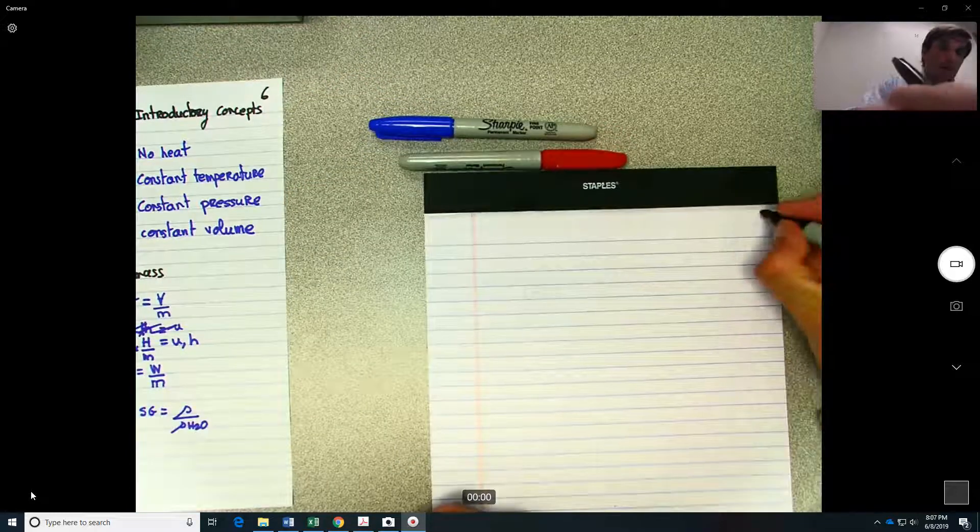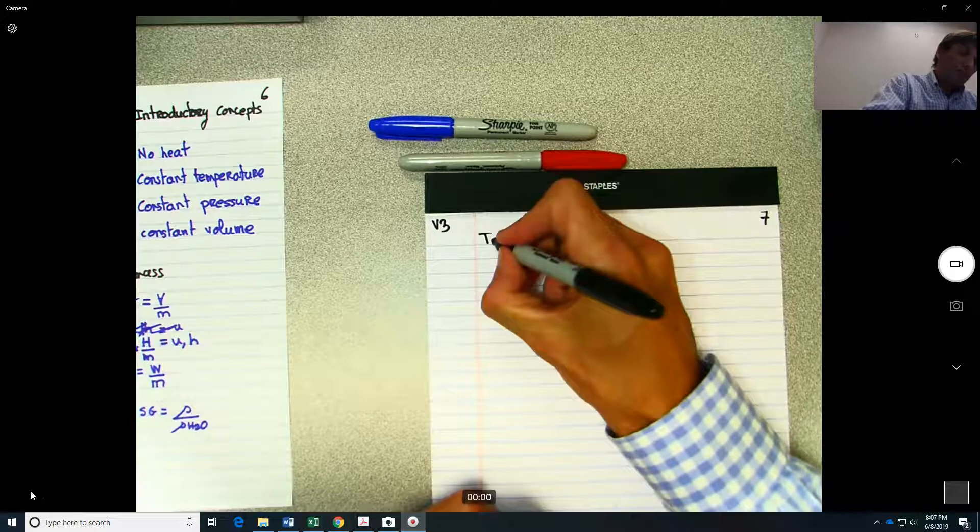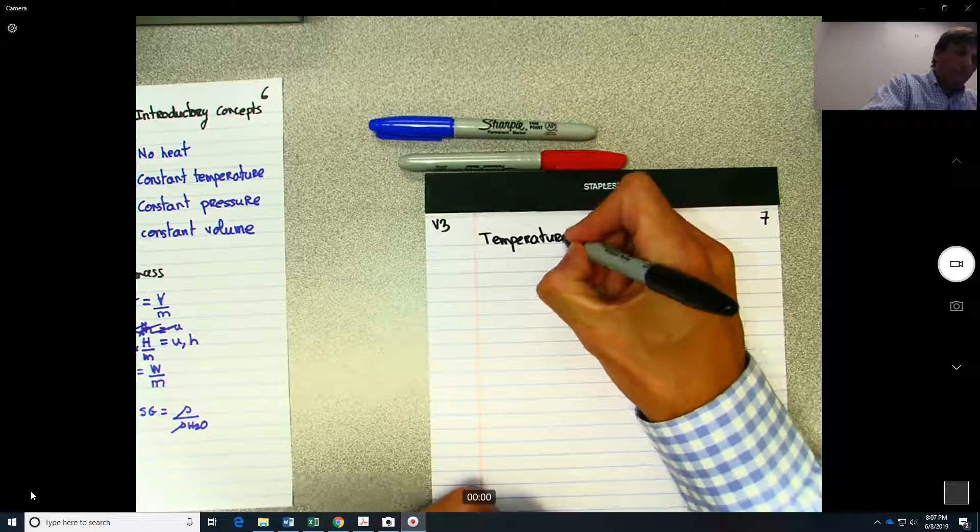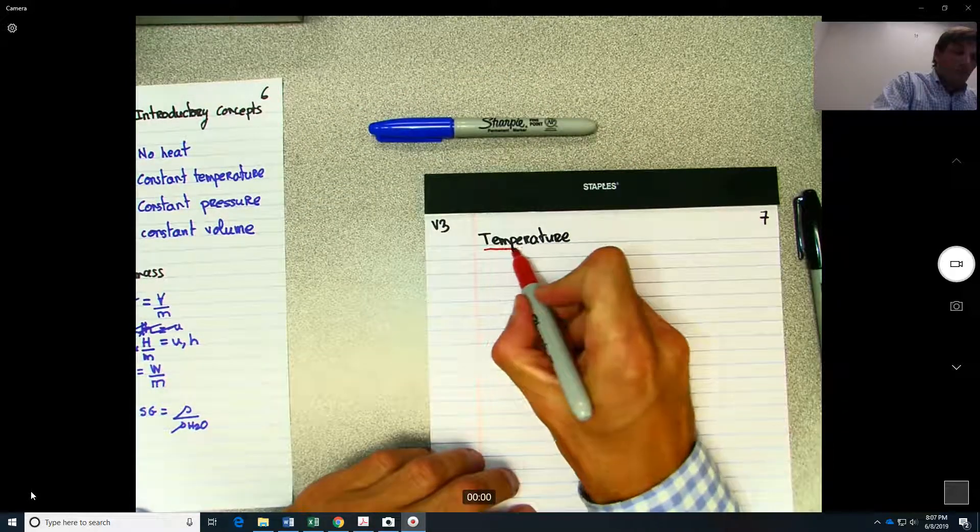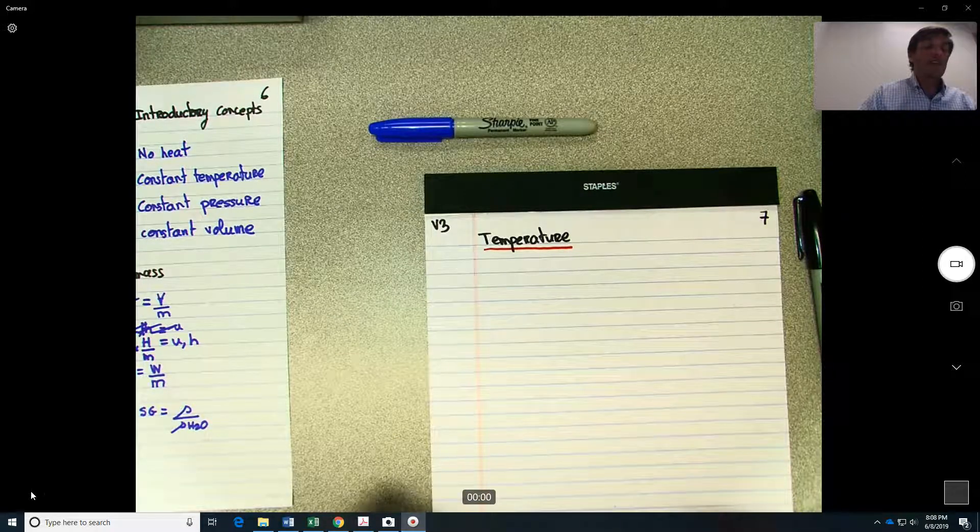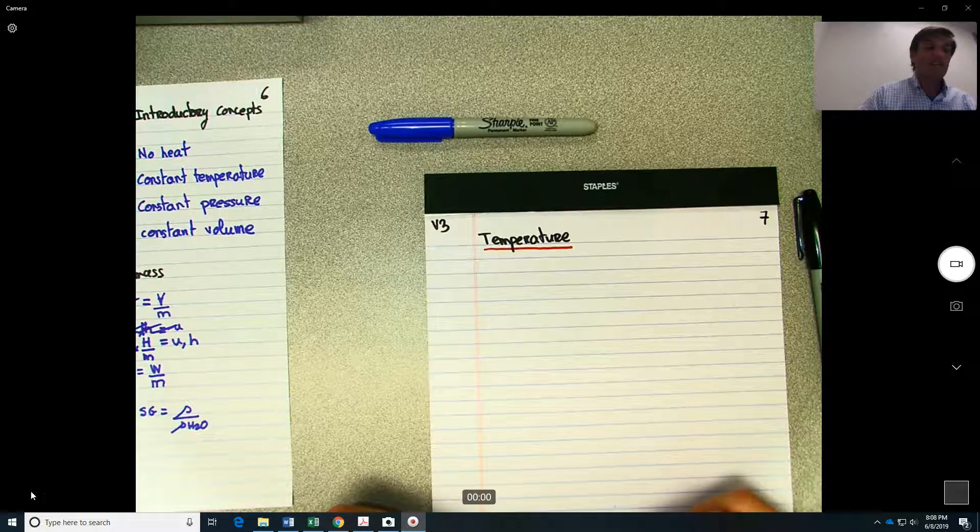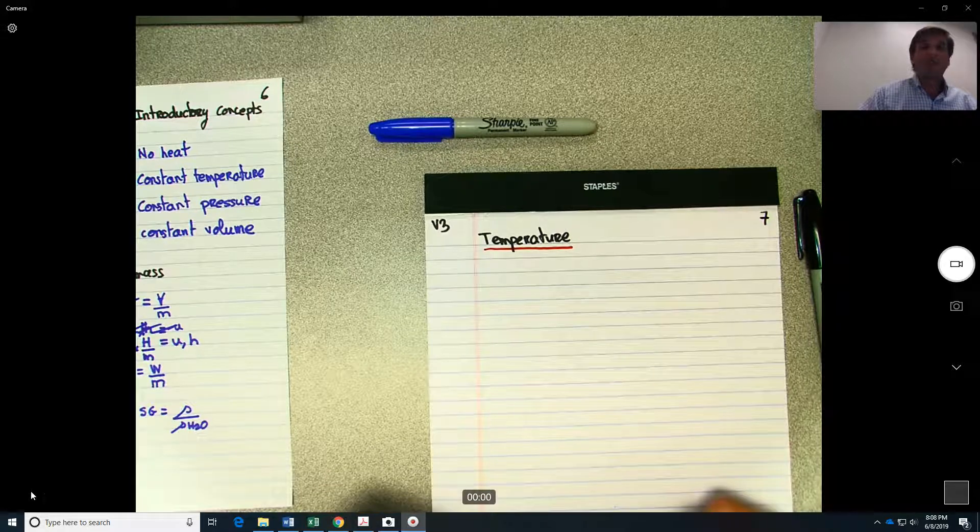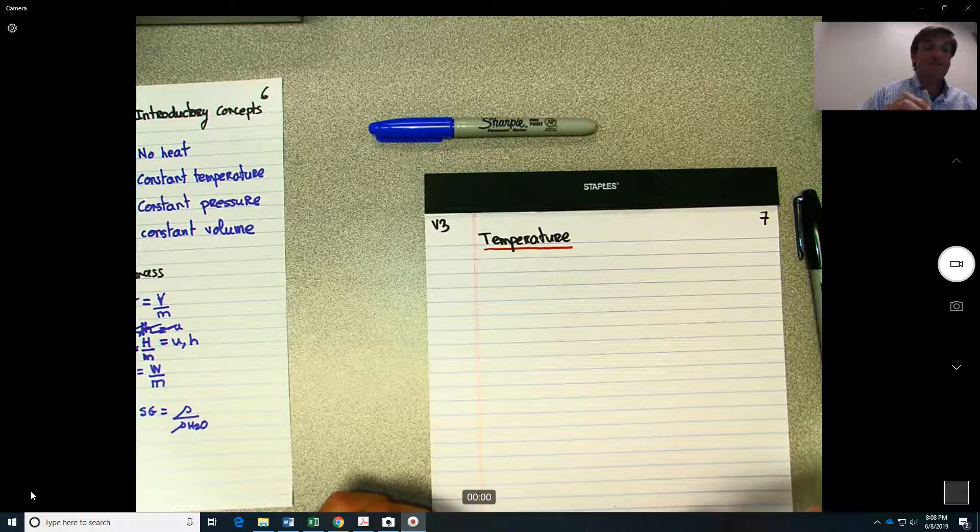Let's first talk about the temperature. So if you remember from last video, we say that the substance is defined by its properties. And that temperature, for example, is a property, pressure is a property, the mass is a property. And we have two types of property, intensive and extensive.